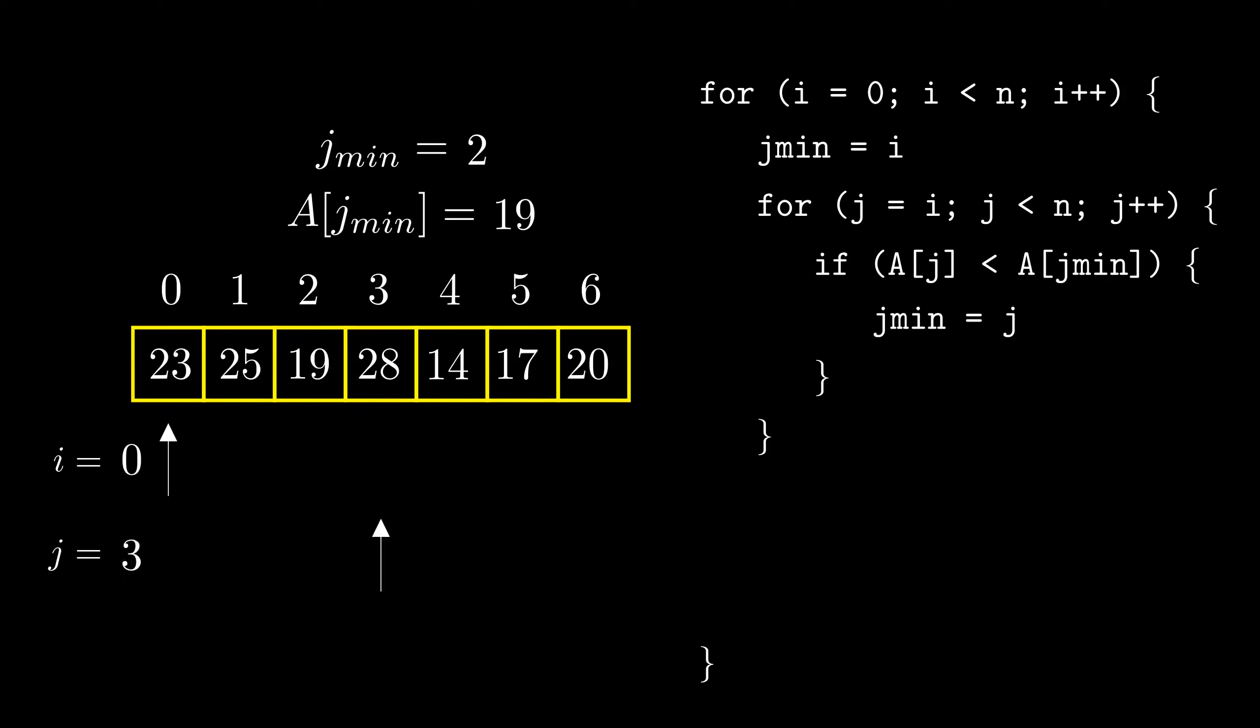We then increment j to 3. Is 28 smaller than 19? No. Increment j to 4. Is 14 smaller than 19? Yes. So update jmin to 4. For j equal to 5 and j equal to 6, we don't find any smaller elements. So we know that the element at index 4 is the smallest element. We swap it with the element at the 0th location.